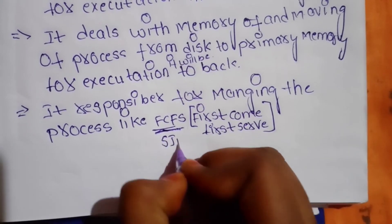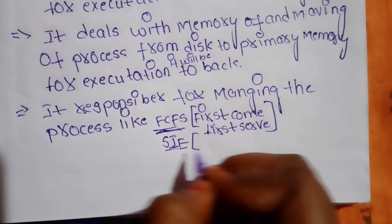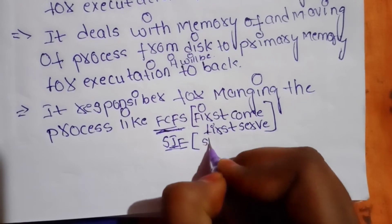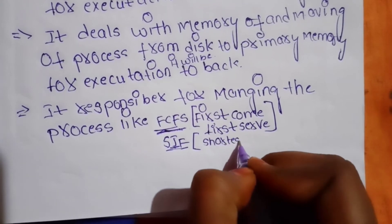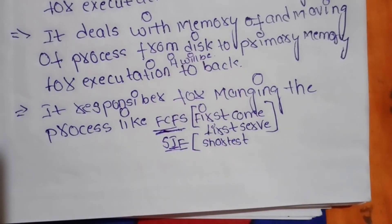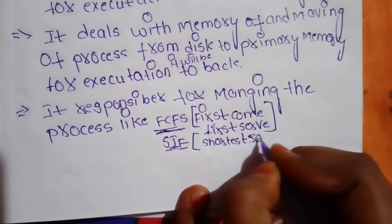Next is SJF, Shortest Job First. Among all processes in the waiting queue, the one with the least execution time will enter first and be executed first. This is the Shortest Job First algorithm.